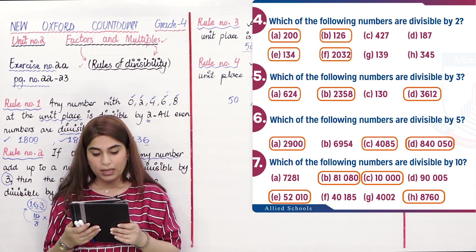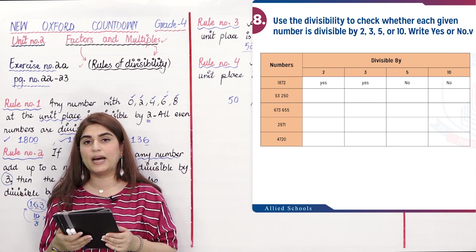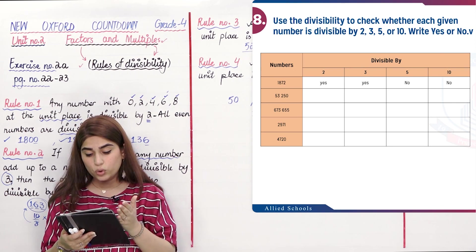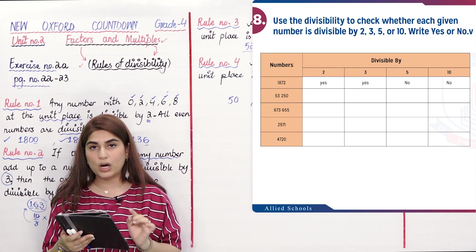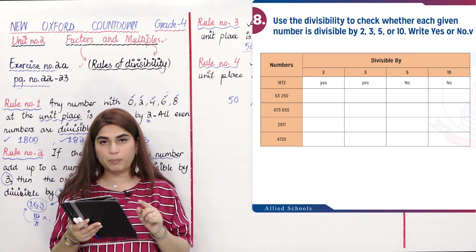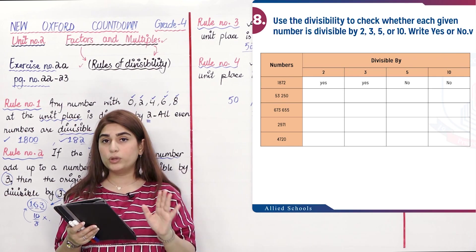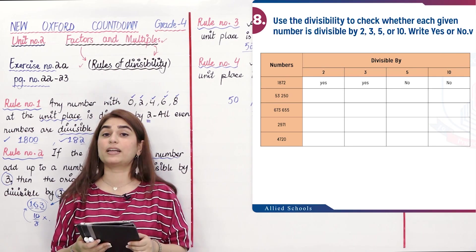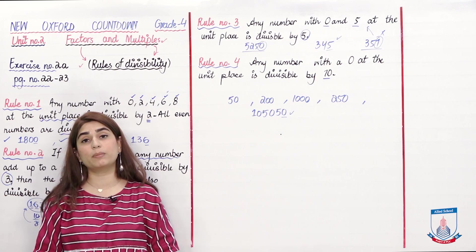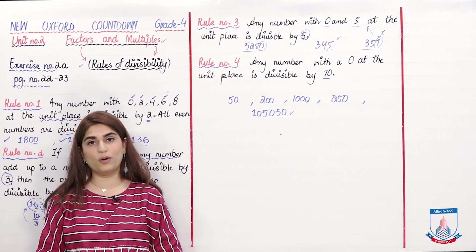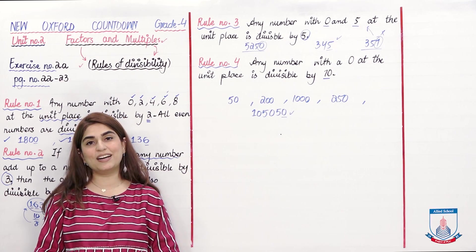Question 8 is your homework. On one side you can see numbers, and on the other side you need to check whether each number is divisible by 2, 3, 5, or 10. Fill in yes or no for each column accordingly. This is where today's video lesson ends. Thank you so much for watching. We will meet again in the next video lesson with Exercise 2B. Allah Hafiz!